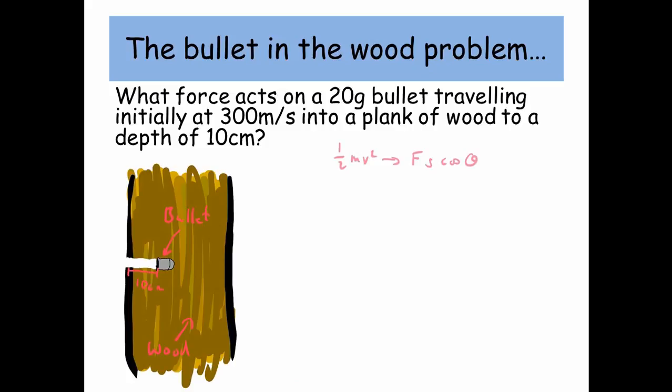Let's look at another approach. We're going to use the idea that half mv squared, the kinetic energy to begin with, is going to be equal to the work done against the bullet, which is the force times the displacement times cos theta.